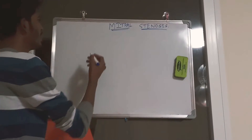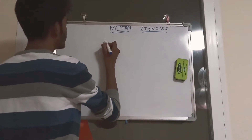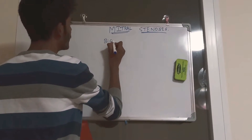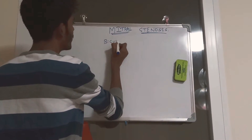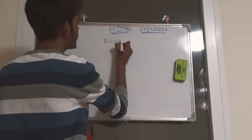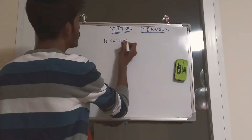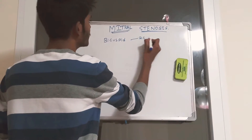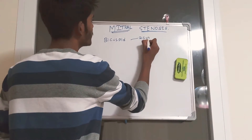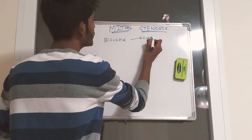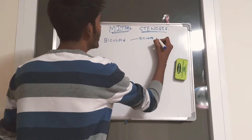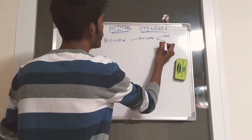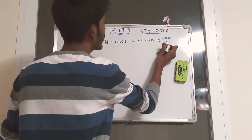The mitral valve is a bicuspid valve. It has two cusps — one is anterior and the other one is posterior.